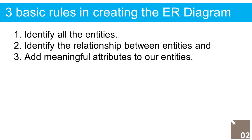We will create and explain the process of making the entity relationship diagram of the event tabulation system. We will follow three basic rules in creating the ER diagram: 1. Identify all the entities. 2. Identify the relationship between entities. 3. Add meaningful attributes to our entities.